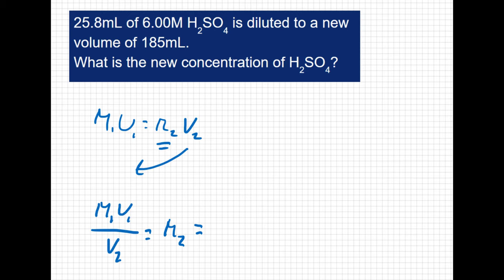So M1 is 6 molar. And V1 is 25.8 milliliters. And V2 is 185 milliliters. Now you might be shaking your head a little bit, because in the previous problem we had to convert to liters, and I'm not doing that here. You don't actually have to here, because if you take a look at your units, the milliliters here cancel out the milliliters here, and then I'm just left with molarity as my unit, which is what we want. I get a concentration of 0.837 molar.